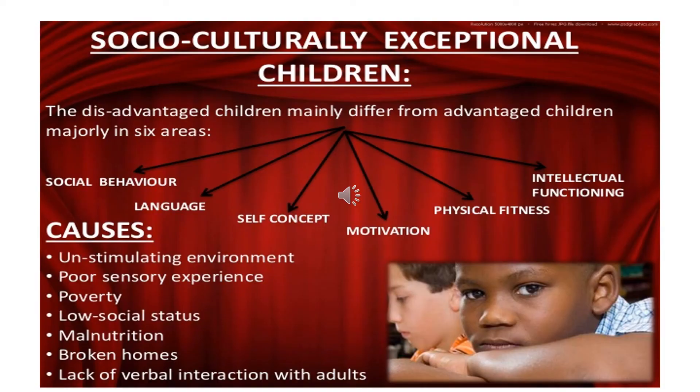Socio-culturally exceptional children: the disadvantaged children mainly differ from advantaged children in six areas — that is, social behavior, language, self-concept, motivation, physical fitness, and intellectual functioning. The causes for socio-culturally exceptional children are unstimulating environment, poor sensory experiences, poverty, low social status, malnutrition, broken homes, and lack of verbal interaction with adults.